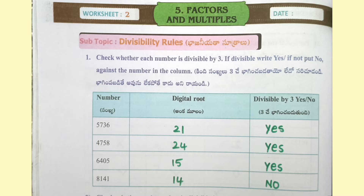Worksheet 2. 5736 — digital root is 21, so yes, divisible by 3. 4758 — digital root is 24, divisible by 3, yes. 6405 — digital root is 15, yes, divisible by 3. 8141 — digital root is 14, so not divisible by 3, no.